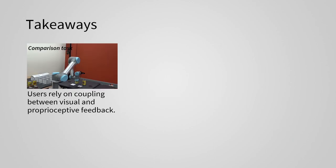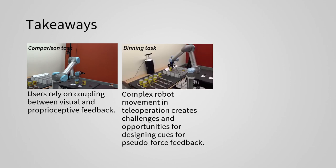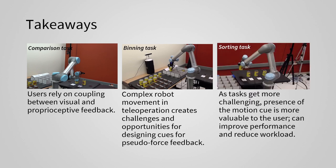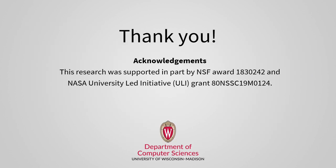I will conclude by summarizing our three main takeaways. Users rely on coupling between visual and proprioceptive feedback. Complex robot movement in teleoperation creates challenges and opportunities for designing cues for pseudo-force feedback. As tasks get more challenging, presence of the motion cue is more valuable to the user by improving their performance and reducing workload. Thank you for your time.